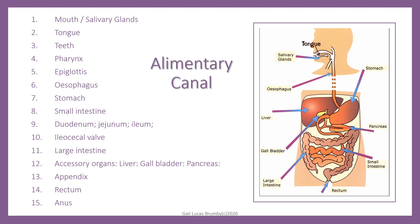The digestive system consists of the alimentary canal — the tube that runs from the mouth to the anus. Along the way we'll be talking about the mouth and the salivary glands, the tongue, teeth, the pharynx, the epiglottis, the oesophagus running down to the stomach, what enzymes are present in the stomach, then continuing into the small intestine: the jejunum, the ileum, the duodenum, the ileocecal valve, moving on to the large intestine, three accessory organs — the liver, the gallbladder and the pancreas — as well as the appendix, the rectum and the anus.